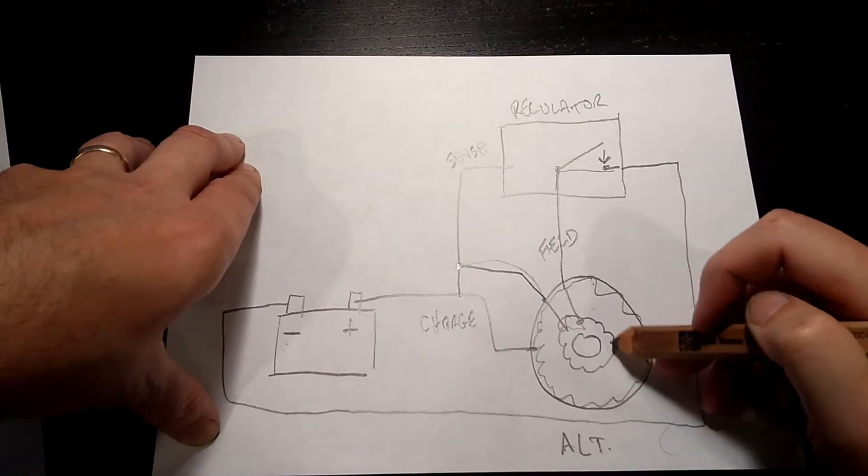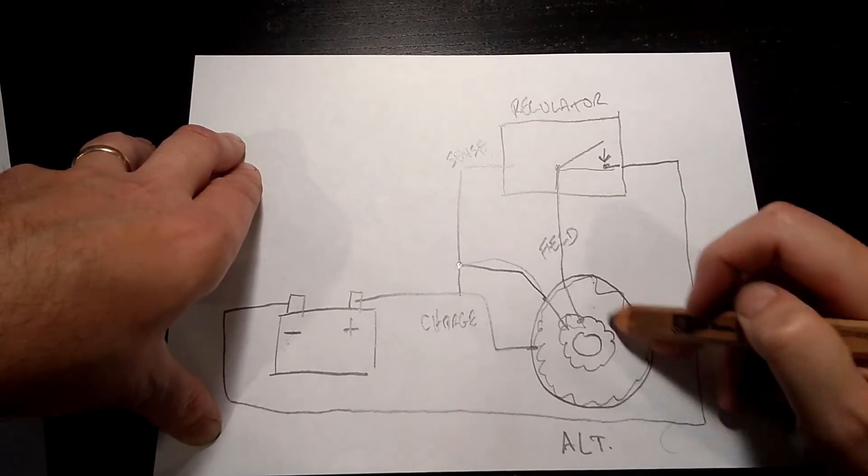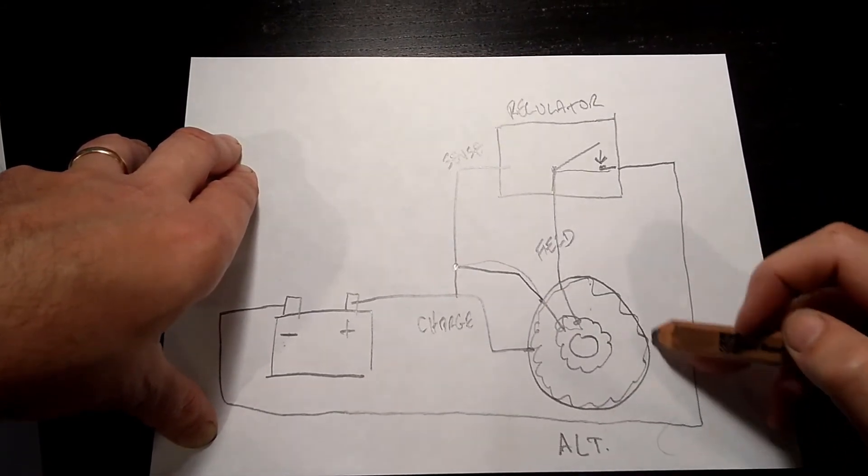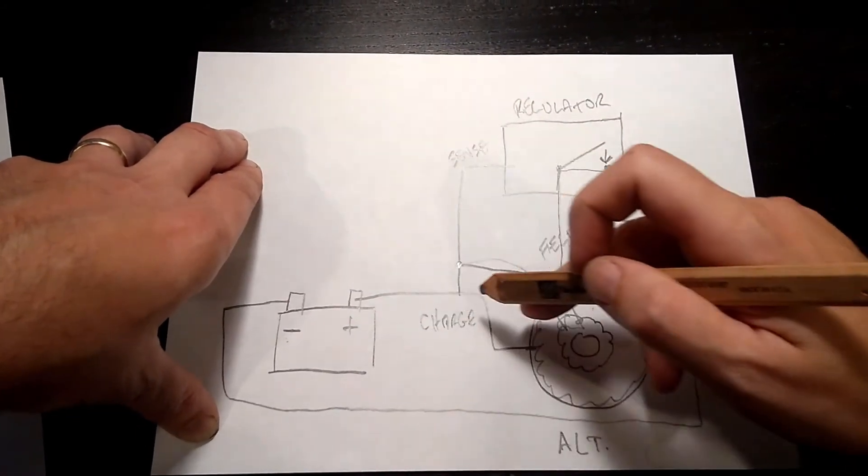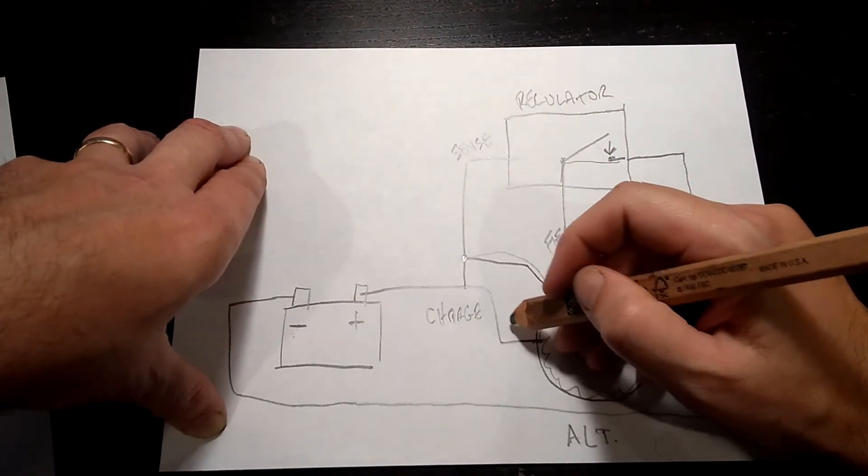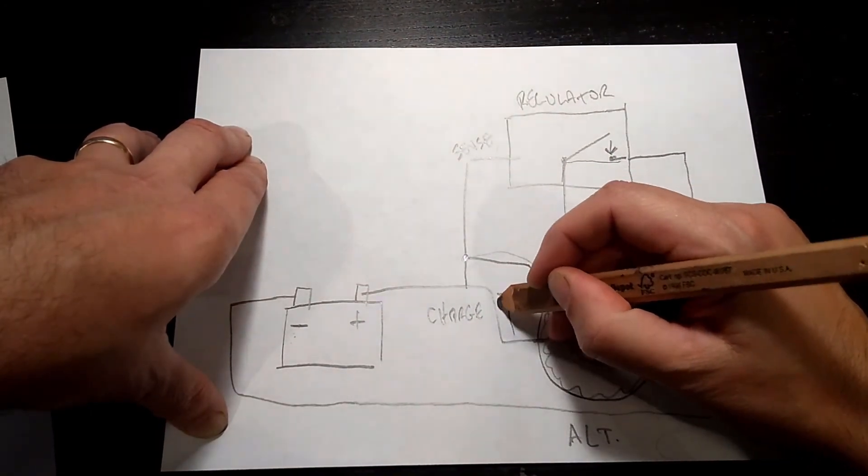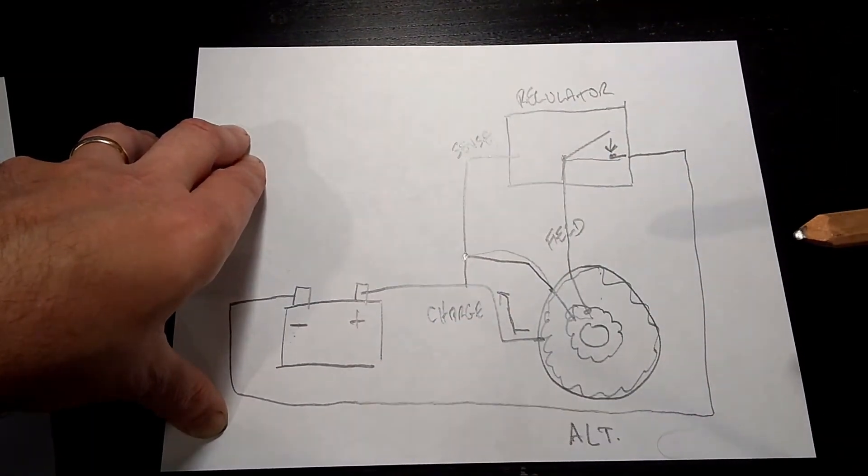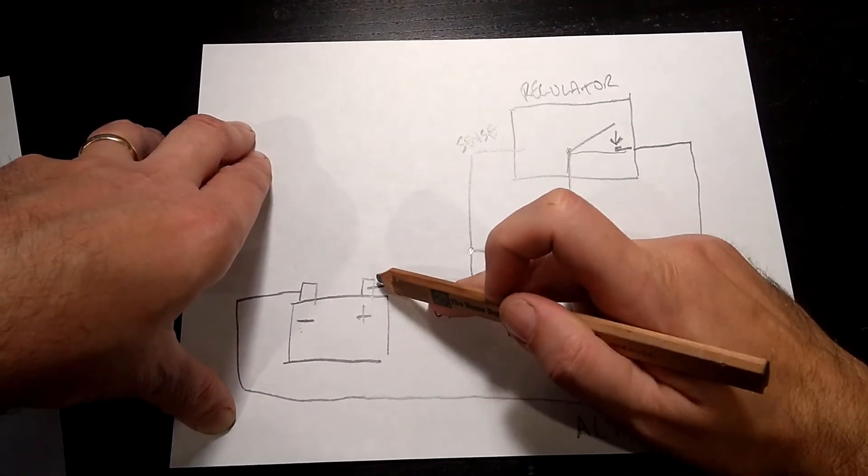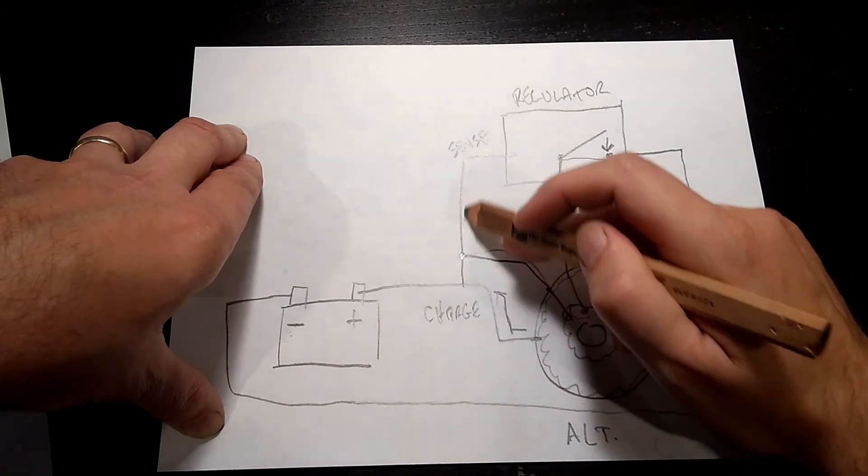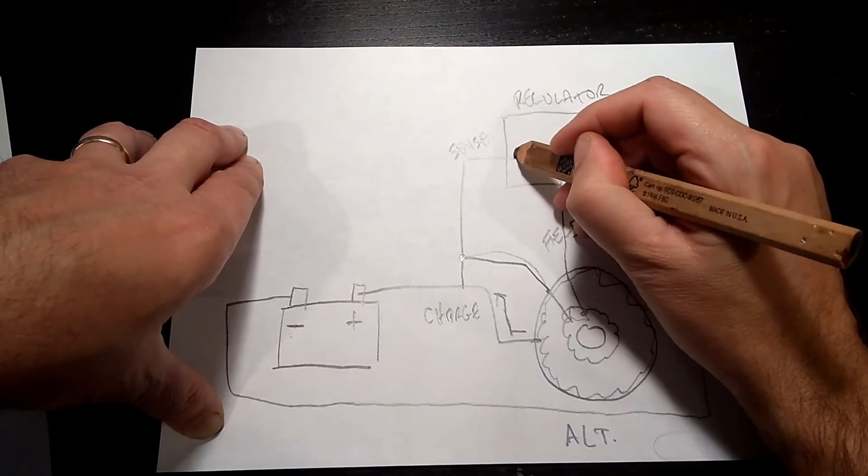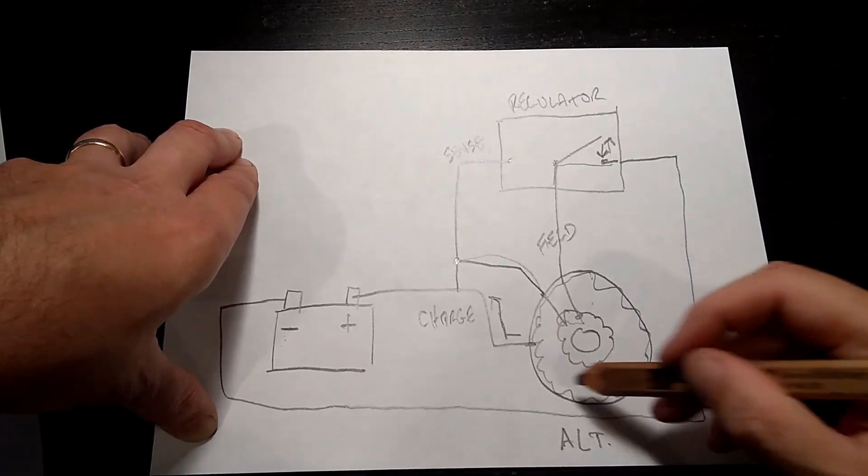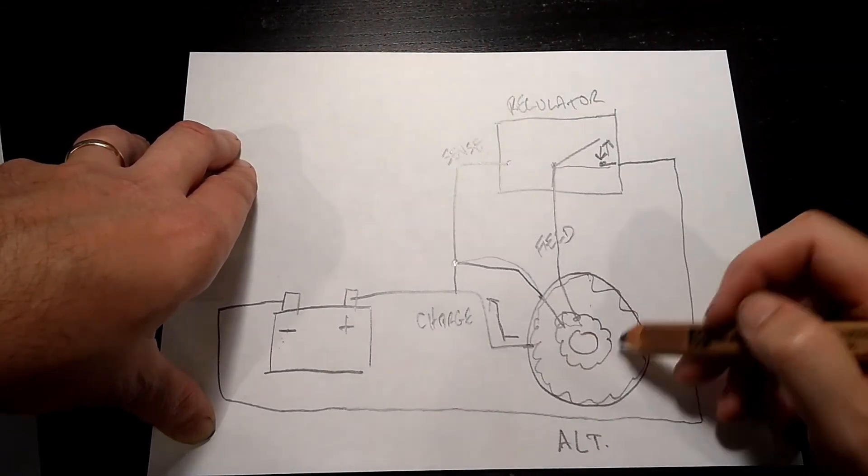Electricity flows through here, flows through the field wires, into the stator, which then energizes it, causes it to charge. And electricity then flows out of the alternator to the battery, charging up the battery. When it gets up to the proper voltage, the regulator senses that, and then opens this back up, which then turns off this charging circuit.